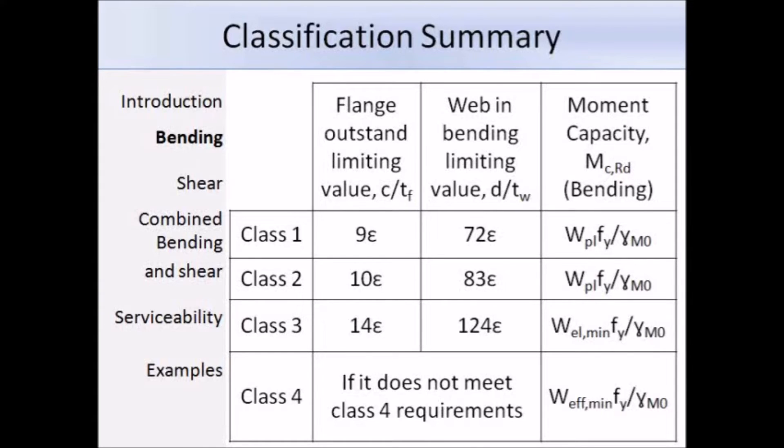Here's just a summary of the class limits and the corresponding moment of capacity equations used in Eurocode 3. In hot rolled design the majority of standard cross sections will be class 1, 2 or 3. Notice the pattern of the equation for the moment of capacity: you'll have the modulus times the yield strength divided by a partial factor, and it's only the modulus that changes unless determined by the class.